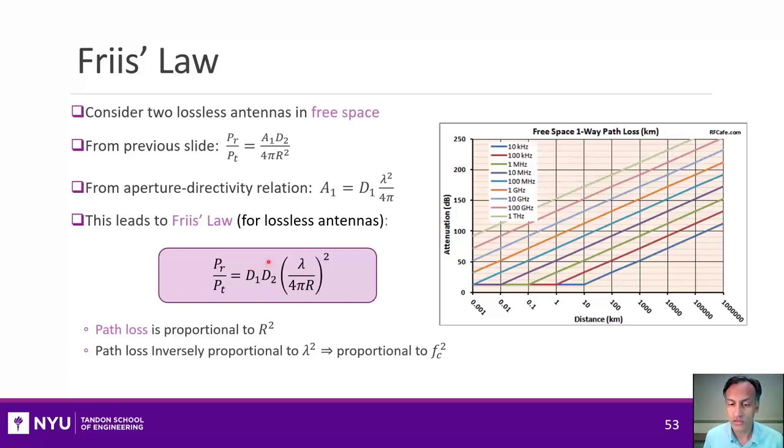Just to illustrate this, if we take the path loss between two isotropic antennas, so the directivity is 1, or equivalently what you would call the omnidirectional path loss, this graph plots the omnidirectional or free space path loss as a function of the distance, and you can see it grows exponentially, and it also grows as we increase in frequency.